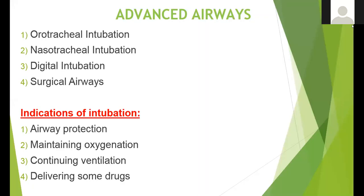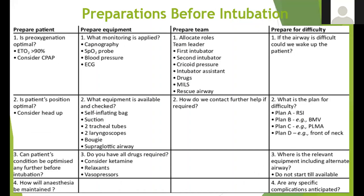Why do we need to intubate a child? For a child who cannot maintain the airway, to protect the airway, for oxygenation, ventilation, or to deliver medications. To prepare for intubation, even in emergencies, follow these steps: first prepare the patient — position them, open the airway, place oropharyngeal airway, do bag and mask ventilation, and oxygenate to achieve 100% saturation. Then prepare the equipment and team, and always have a backup plan for difficult intubation.